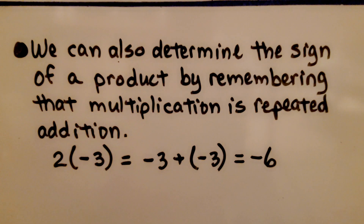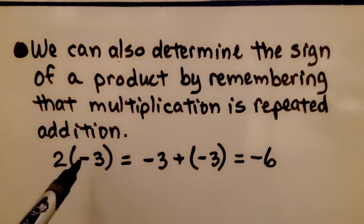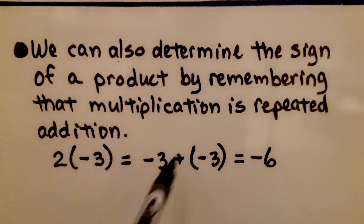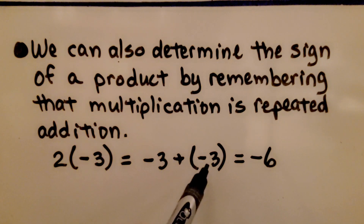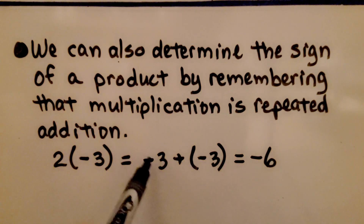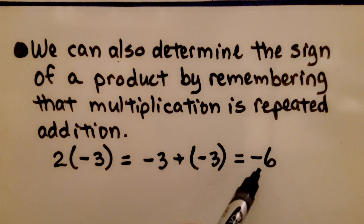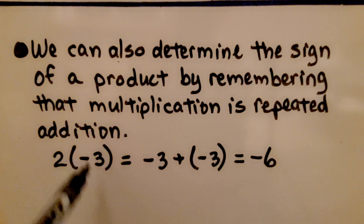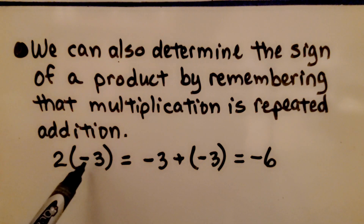We can also determine the sign of a product by remembering that multiplication is repeated addition. We have two times negative three — that means we have negative three two times: negative three plus negative three. They have like signs for the addends, so the sum is going to be like the addends: negative six. Two times negative three is negative six, and we only have one negative factor, so we know the product will be negative.